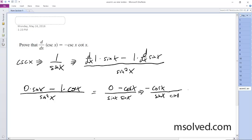So this is the same thing as, this goes back to cotangent, and then this is cosecant. So this becomes negative cosecant x cotangent x.